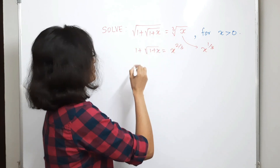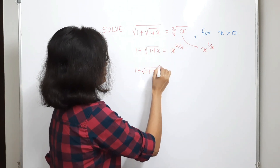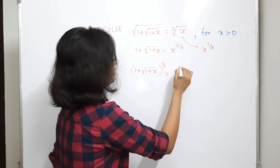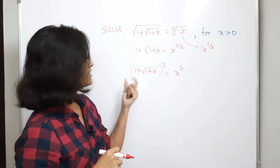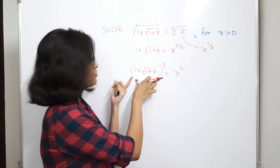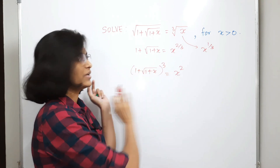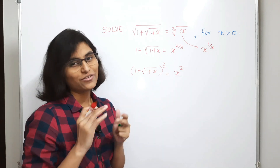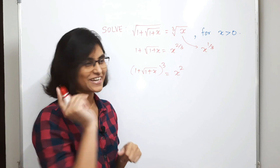By taking the 6th power, we get 1 plus square root of 1 plus x, its cube, equal to x squared — but again this is complicated because we have to apply the formula for (a+b)³ and then solve the expression. So I have a smart way to solve this. Let's get started.